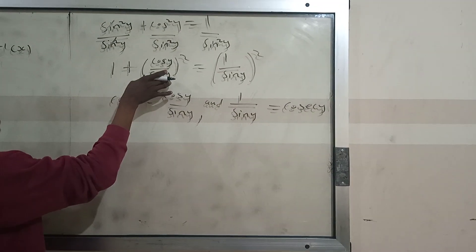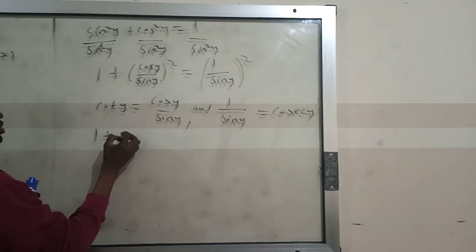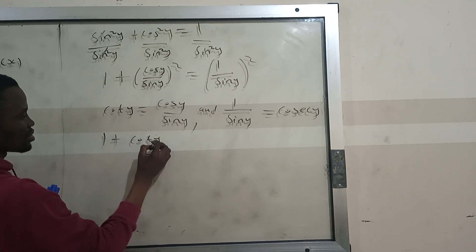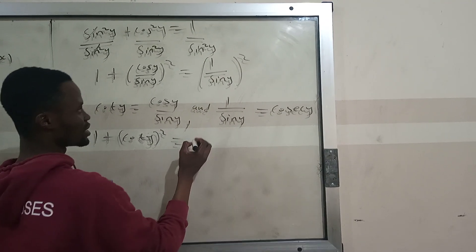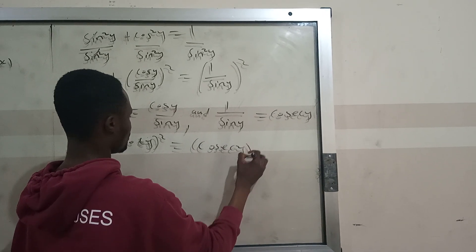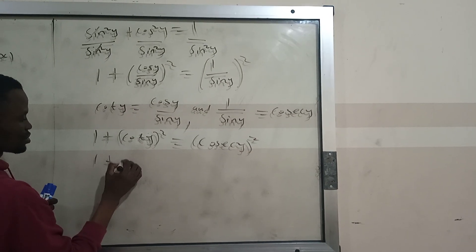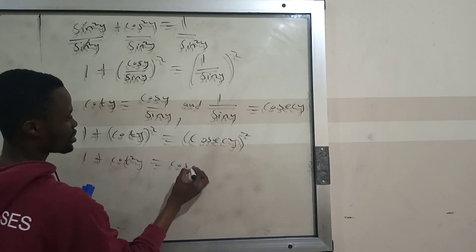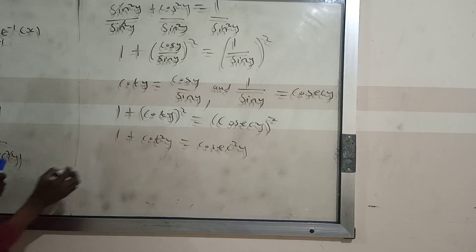It means that in place of cosec²(y) you can put 1 plus cot²(y). So we are going to get cot²(y) all squared, which is the same as 1 plus cot²(y) equal to cosec²(y). So let's come back to the question.